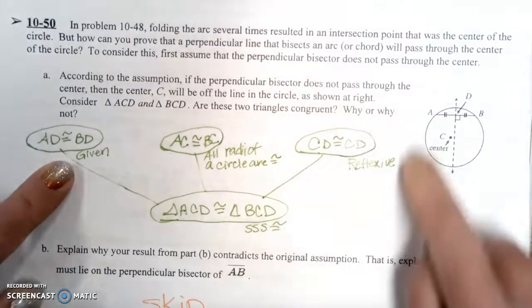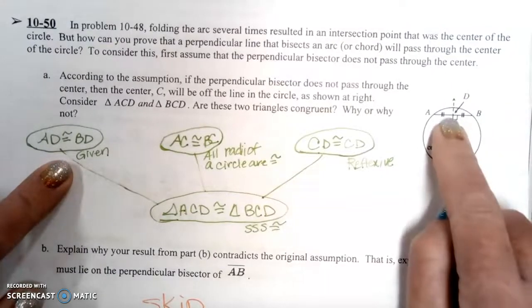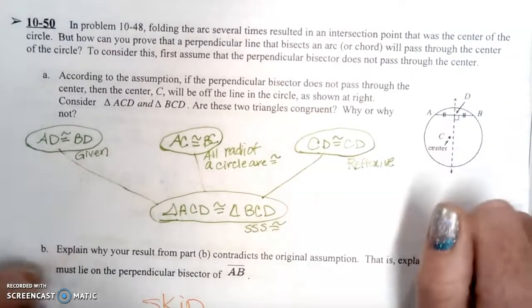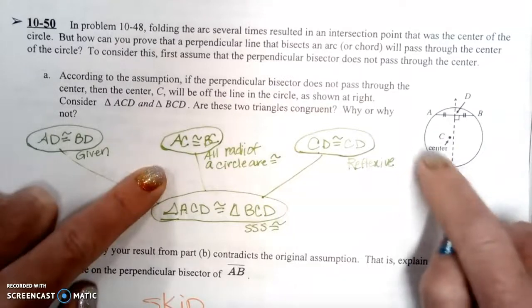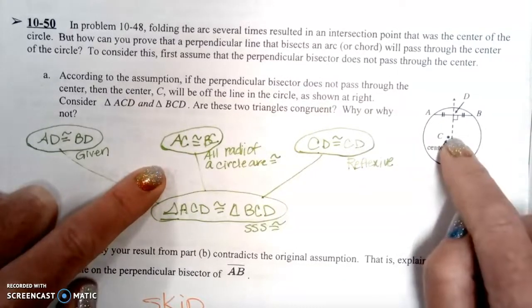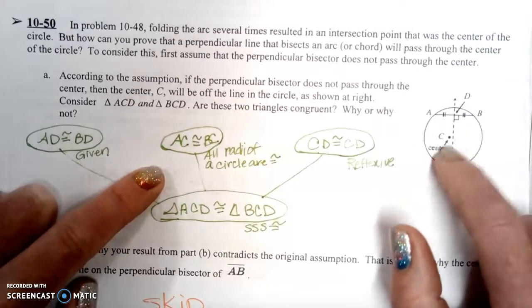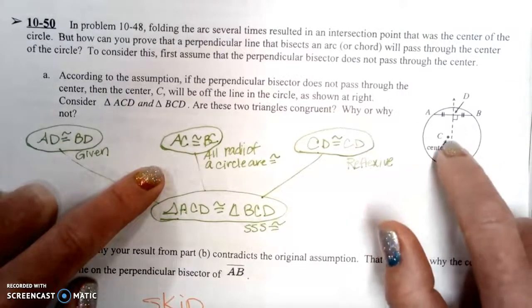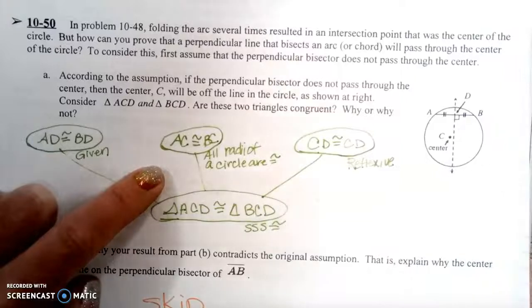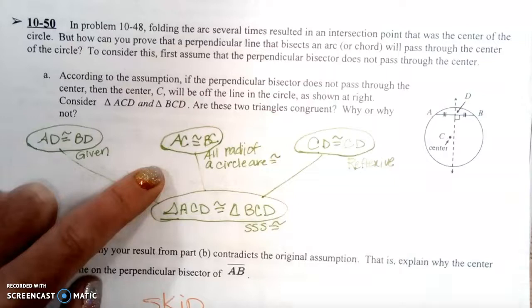So we're given that AD is congruent to BD and AC is going to be congruent to BC because all the radii of the circle are congruent. So from the center here we connected here and here. Those would be radii, and they would be congruent to each other.